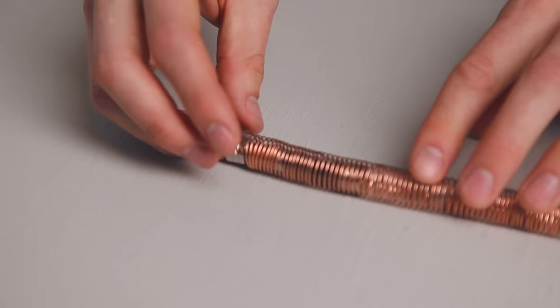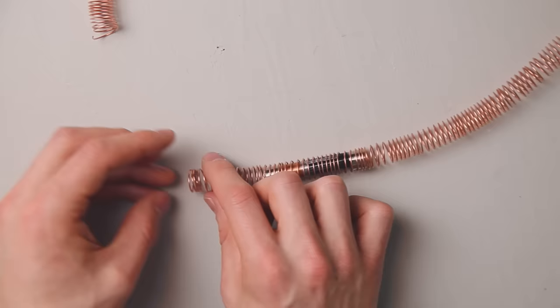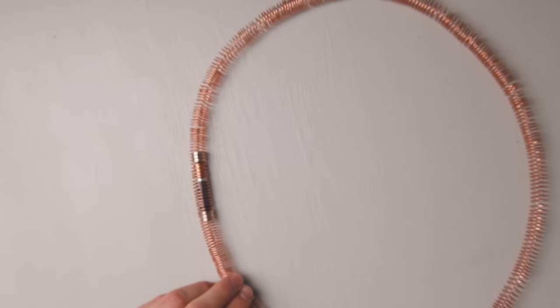If your train doesn't move, try flipping the whole assembly around. If this doesn't work, try flipping one of the stacks of magnets.